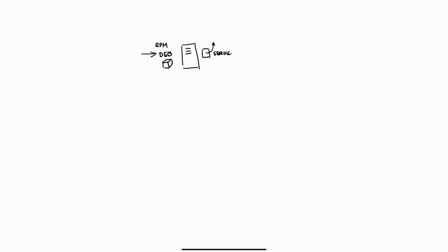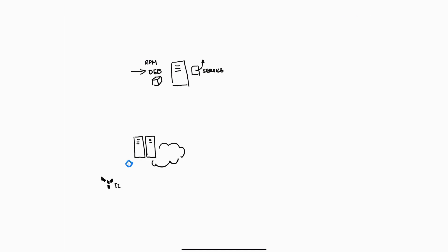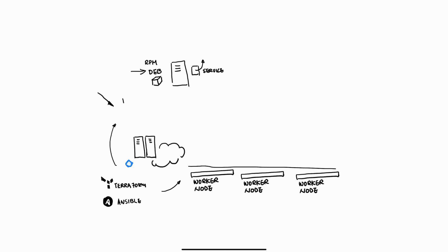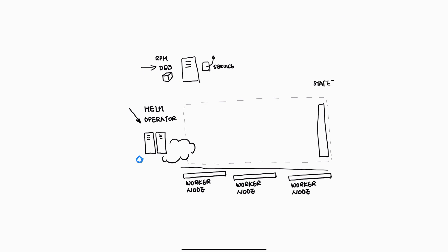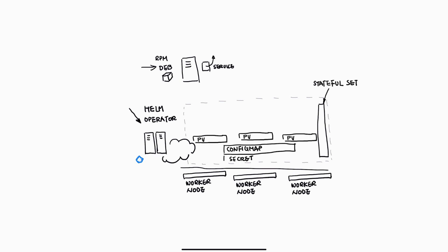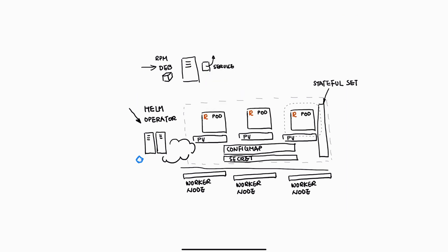Redpanda can be deployed directly on a machine, virtual machine, or Kubernetes. You can automate the deployment by using automation scripts provided by the Redpanda team — Terraform and Ansible. These are all very popular automation tools to help you automate the provisioning of the cluster. For deploying in Kubernetes clusters, you can choose between Helm charts and operators.